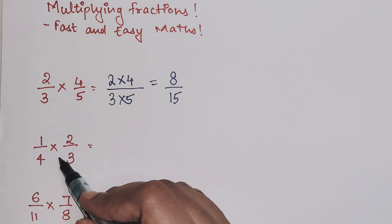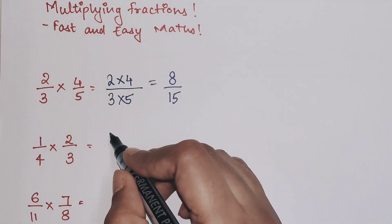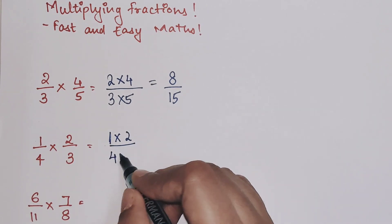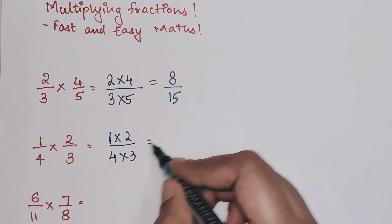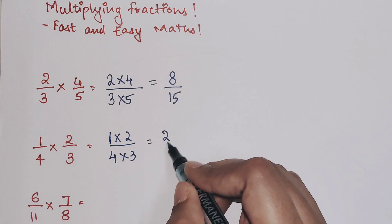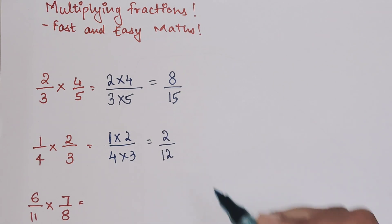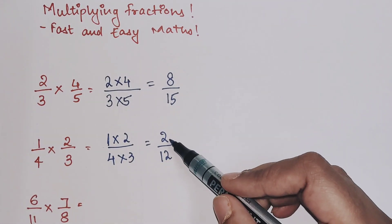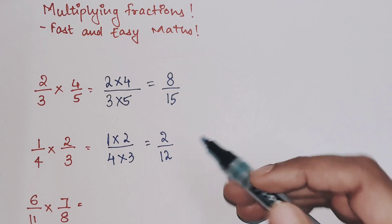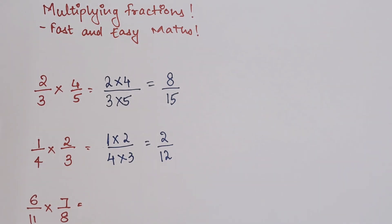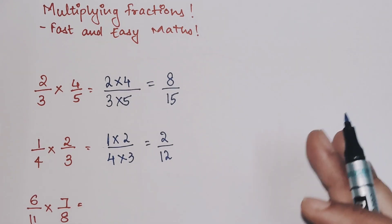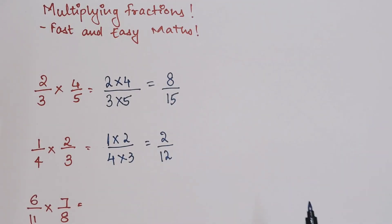In this case, we have 1 upon 4 into 2 upon 3. So we do 1 into 2 upon 4 into 3. This now comes to 1 into 2 is 2 and 4 into 3 is 12. Now please understand, there is a basic rule in fractions. If the numerator and the denominator have something in common, then you have to cancel that out and always write your fractions in the simple form.